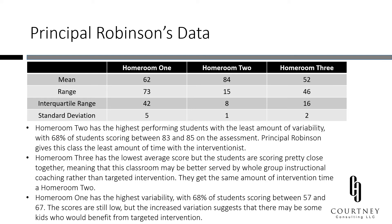Homeroom 1 should get the majority of this interventionist's time. Most students in this class scored between 57 and 67% on the assessment. The scores are still low, but the variation is high, with some students scoring as high as 73 and as low as 52. Every classroom probably has one or two kids who need intervention, but there are some students who can easily be targeted for improvement in this classroom.